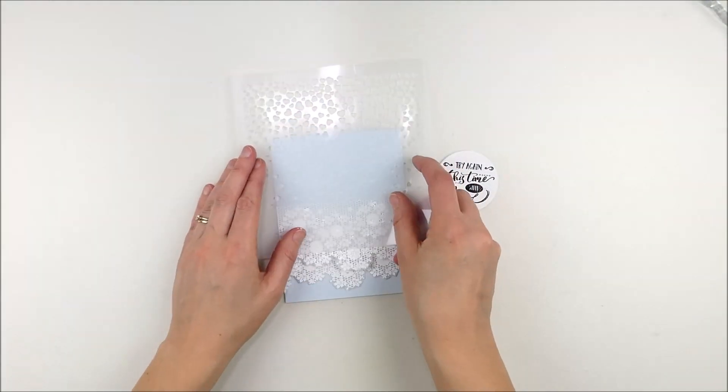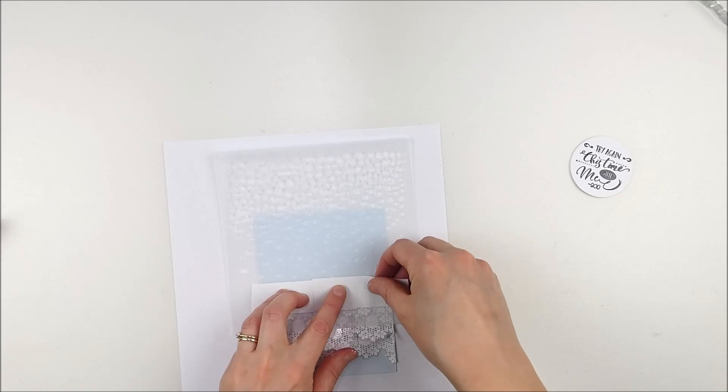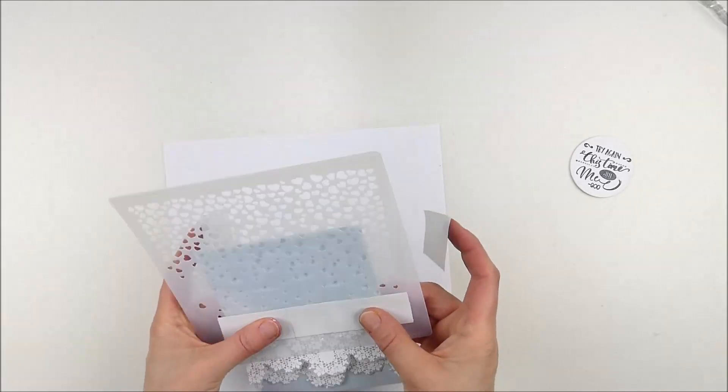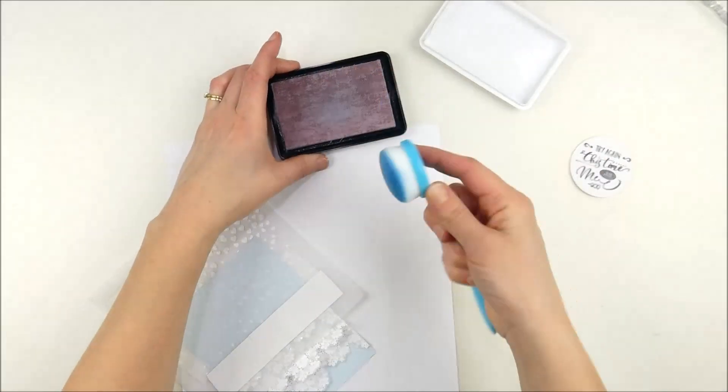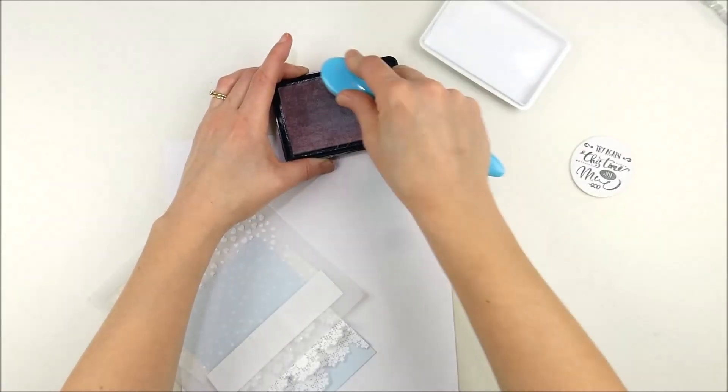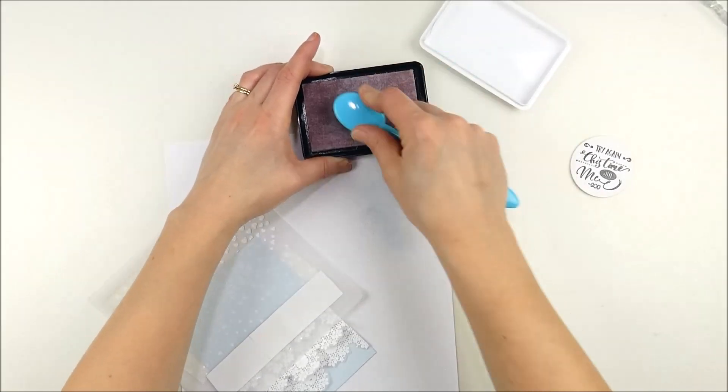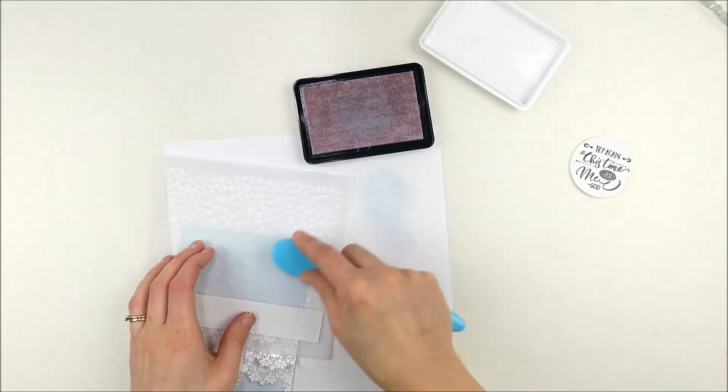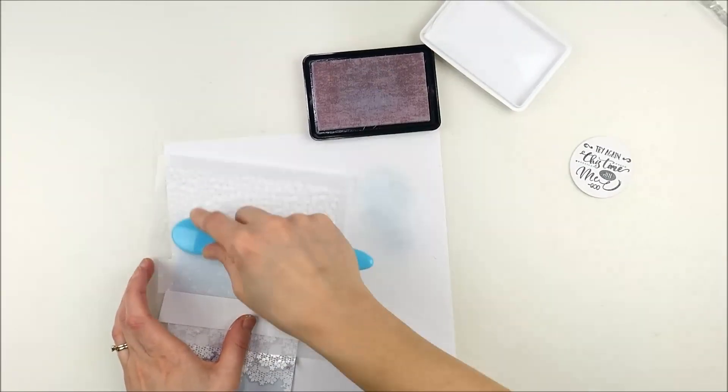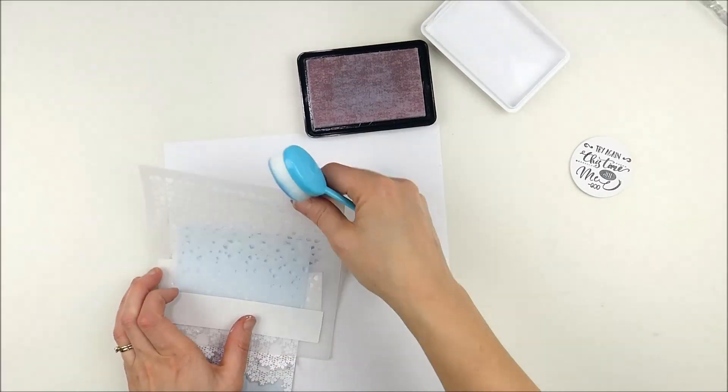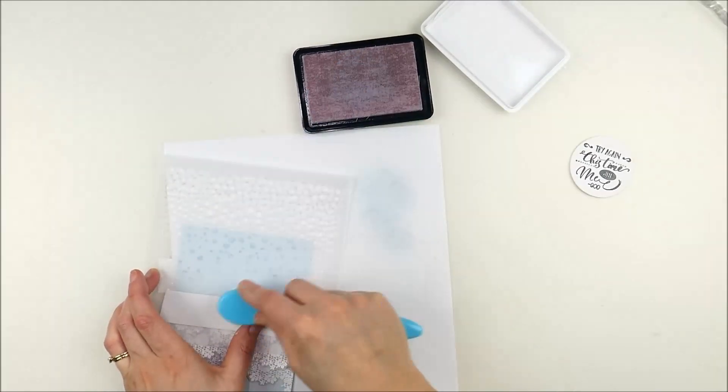Now I'm going to pull out that beautiful new heart confetti stencil that Unity just released—their first stencils this past week. I'm going to use that to add a little texture to the top. I used some Post-it tape to mask off the bottom so it wouldn't go over my doily pieces and also to hold the stencil in place. Then I could peel it up and make sure I was happy with it.